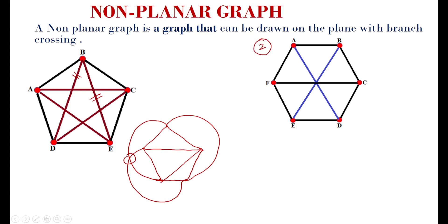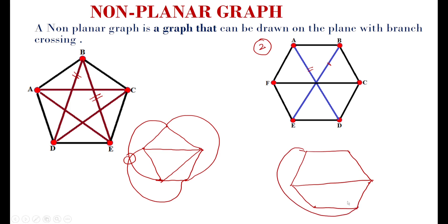Consider problem number two. In the second graph also a non-planar graph. First of all, I am going to redraw this graph — draw the branches like this and then inside, and next draw these two branches outwardly because both are crossing each other in the middle branch. I am going to draw branch A to D like this, and next draw the branch like this. Whether the branches are drawn inside or drawn outwardly, in both cases there may be a crossing of branch. So it is also a non-planar graph.